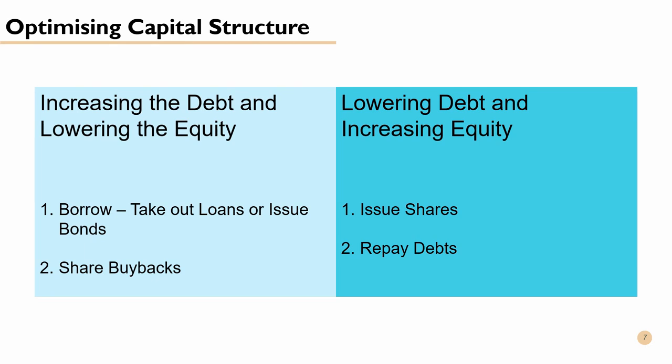To lower the WACC, the business simply needs to modify its debt-to-equity ratio until the WACC reaches its lowest level. To increase the debt component and lower the equity component, the business could borrow money by taking out loans or going out to the capital market to issue debt, while using the proceeds to complete share buybacks. On the other hand, the business could lower debt levels by issuing more shares and using the proceeds to repay their loans.